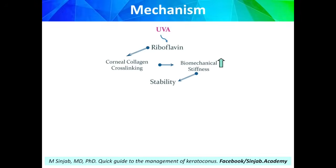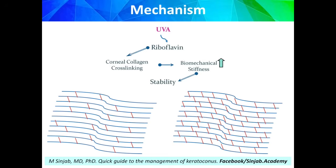The mechanism of action of corneal crosslinking is that we use riboflavin, which is vitamin B2, to interact with ultraviolet A to produce oxidative agents. These oxidative agents will increase the bonds between and within collagen fibers to increase biomechanical stiffness of the cornea and lead to stability and to stop the progression of keratoconus.